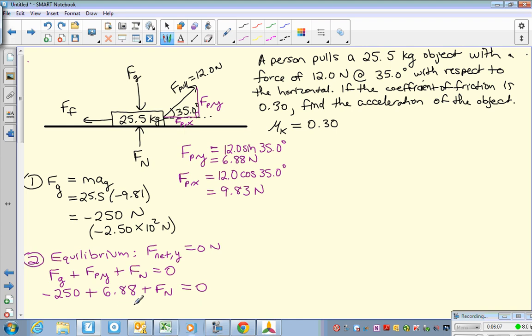So hopefully you should be able to solve this rather quickly. The normal force would have to be 250 minus 6.88, which is 243. Now remembering how to do sig figs, it's always the last decimal place. So really, since this has no decimal places, my answer should have no decimal places. So this actually becomes 243 newtons. So there's our normal force.